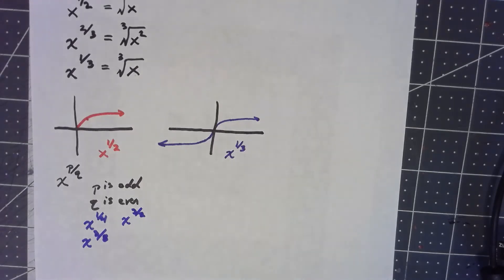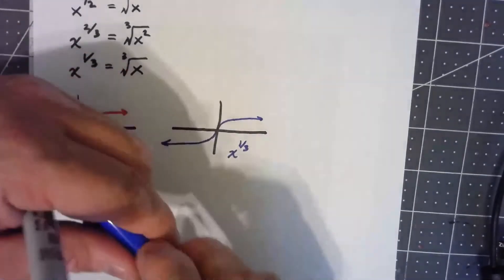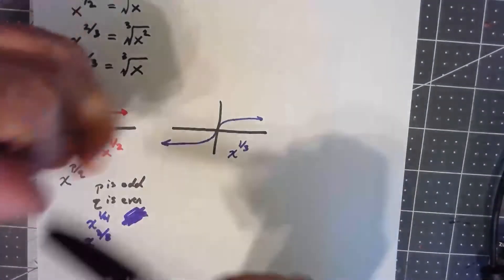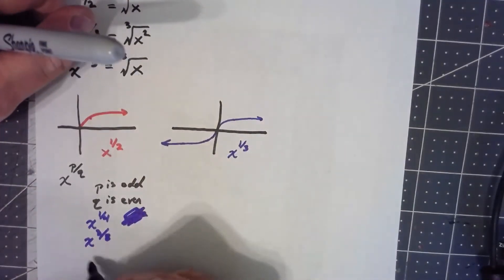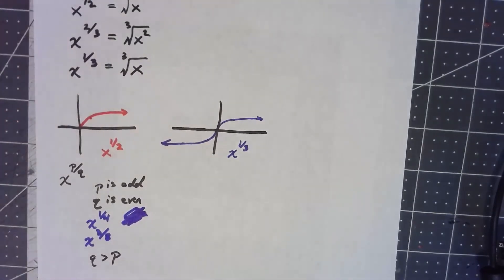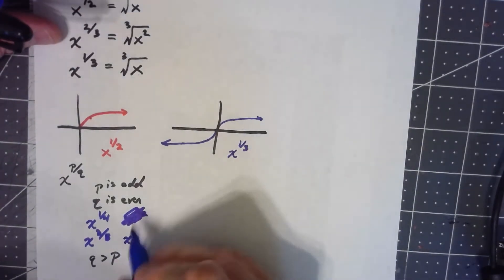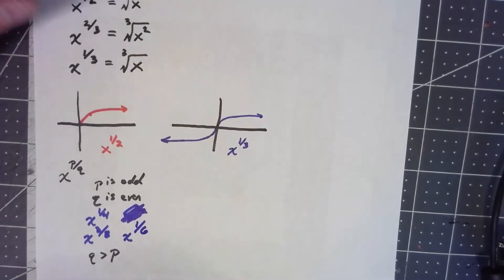Actually, let me change that a little bit. I'm going to throw x to the 3/2 out, because there is another rule here that the bottom has to be bigger than the top. We're only looking at things that are less than one when we're looking at these graphs. But at the same time, something like x to the 1/6 would look like this.